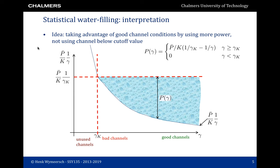In statistical water filling, we have a single channel that is random and varies over time. The water filling solution is given on the right, where p is the power allocated when the SNR is equal to gamma. This power is zero when the SNR is below a threshold, and non-zero when the SNR is above a threshold. When the SNR is above the threshold, the power is allocated as given in the equation. We notice that when the SNR is higher, we will allocate more power.